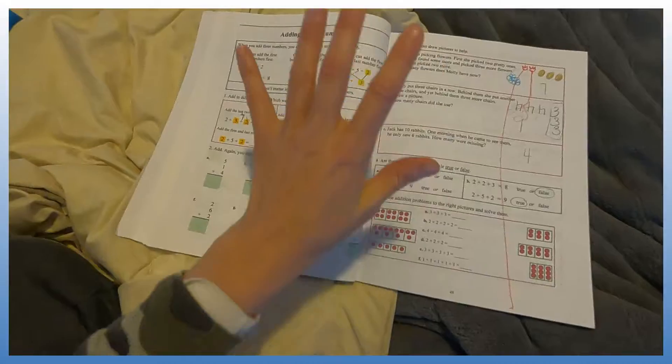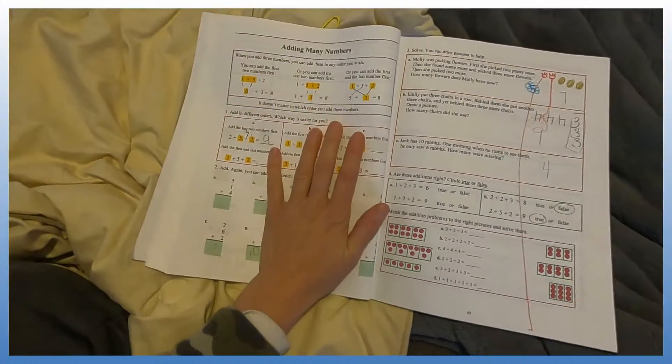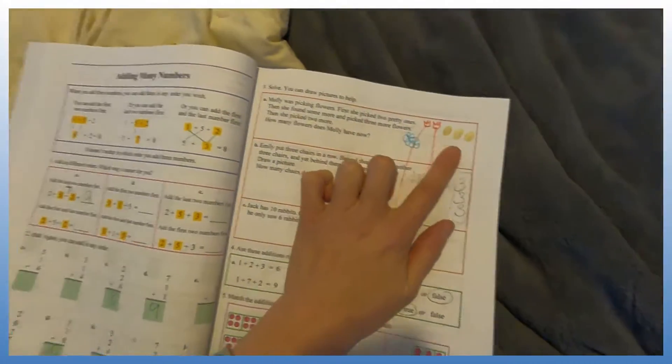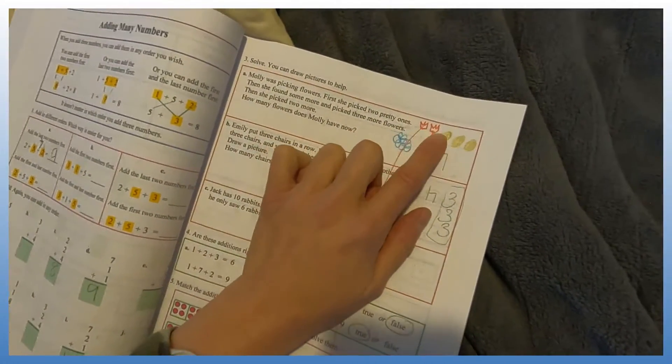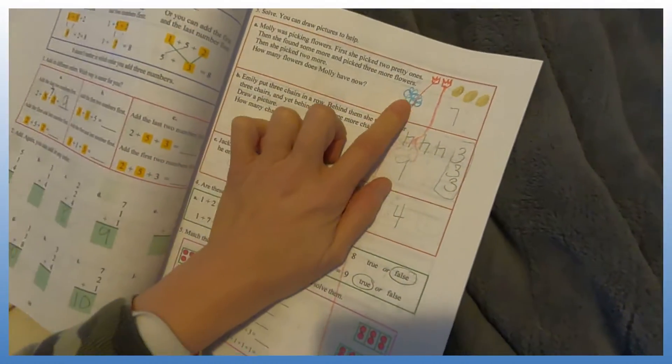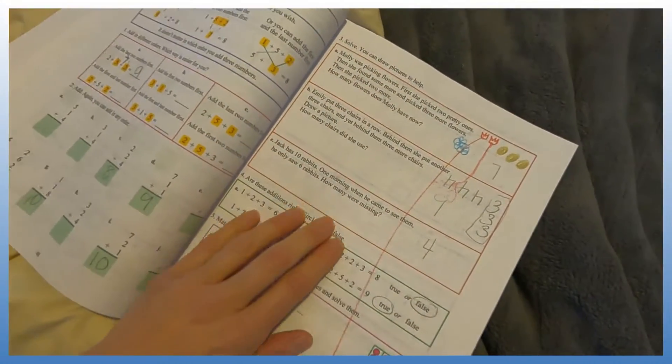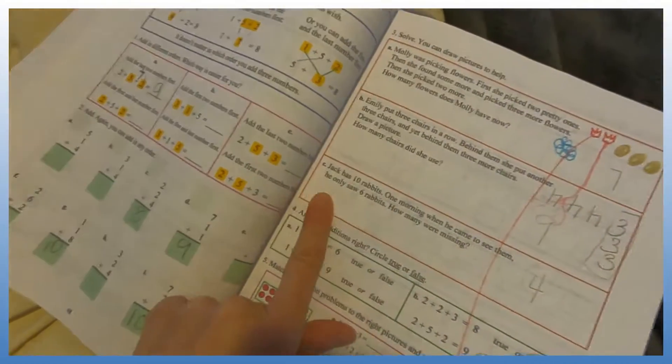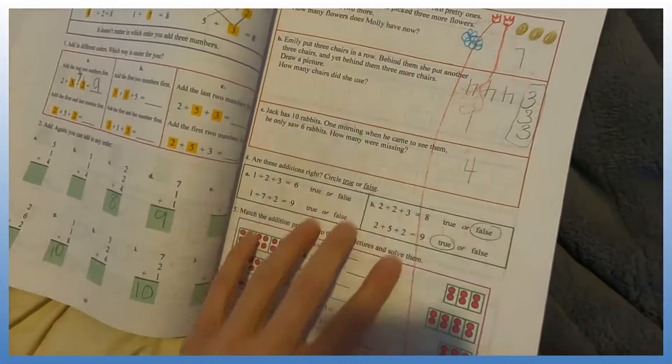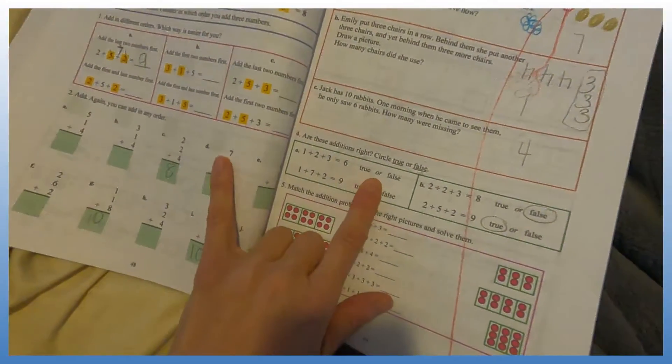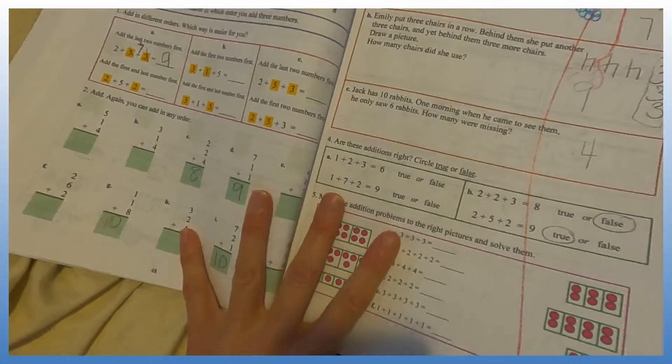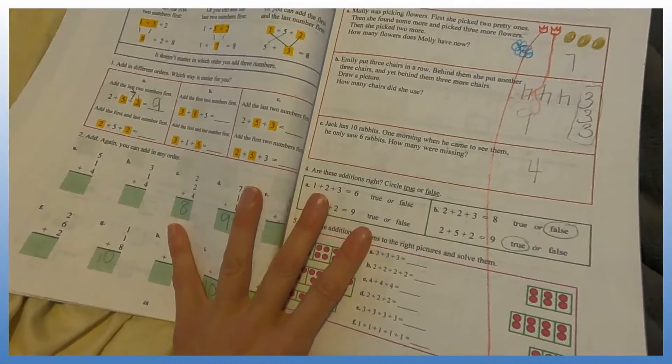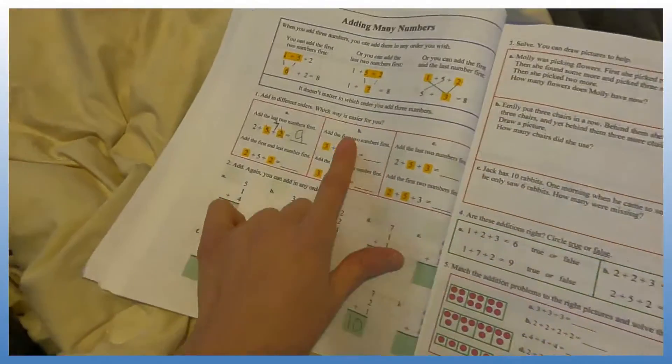When I get to an area I want to make sure that he knows, this is adding many numbers, I want to make sure that he knows without a doubt these. So Molly was picking flowers, first she picked two pretty ones then she found more and picked three more flowers. I was drawing flowers and then he drew the stems, just so that we could work together to figure out, does he know how to do word problems. Jack has 10 rabbits, one morning he came to see them and then he only saw six rabbits, how many were missing. This is interesting, true or false, one plus two plus three equals six. I've showed you in other math videos the morning challenges we've done from Teachers Pay Teachers.